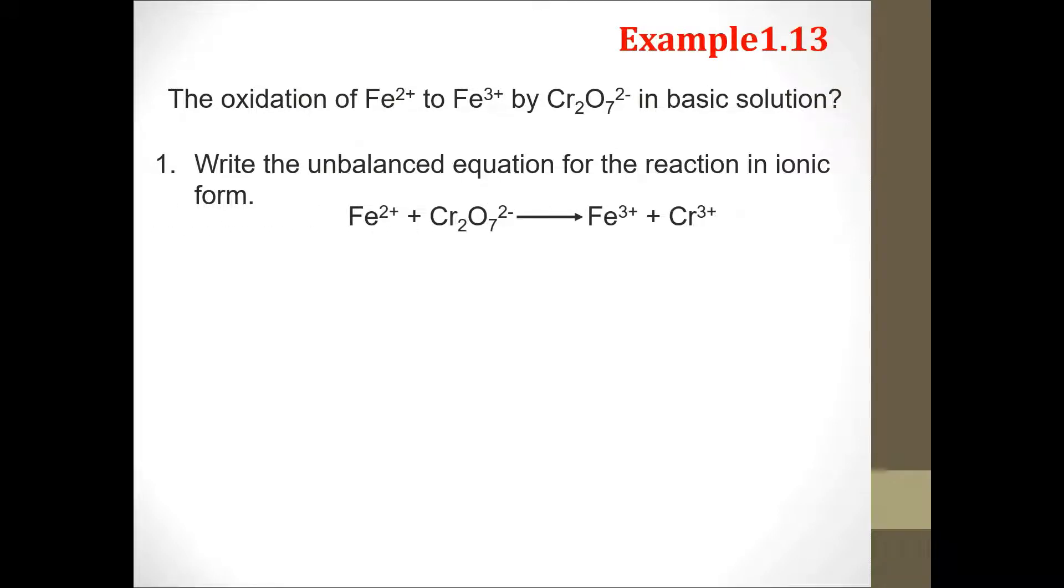Firstly, you need to write the unbalanced equation. You can see Fe2+ is the reactant, and dichromate ion is the reactant. It becomes Fe3+ and Cr3+.